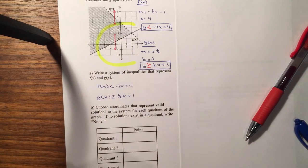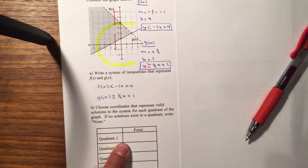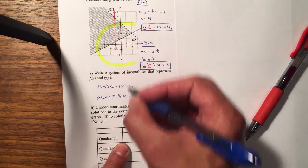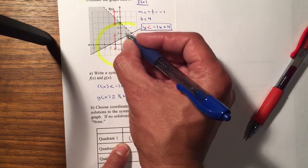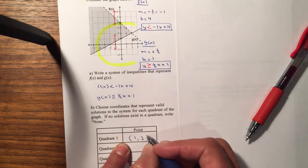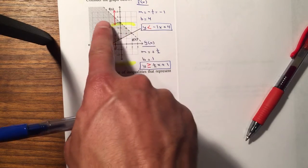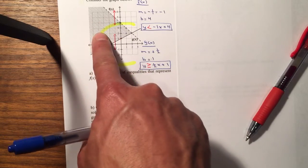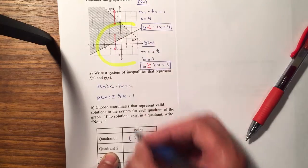On quadrant number 1, select a point in solution. So I'm going to select this point here. So my point is 1 to the right and up 2. Quadrant number 2, you can select any other points that are there. Let's select this point here, so it will be negative 2 and up 2.